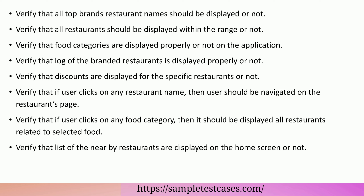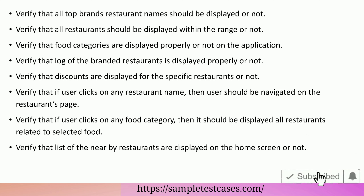Verify that all images should be displayed as per specification in the sliding bar. Verify that all top brands and restaurant names should be displayed. Verify that all restaurants should be displayed within the range. Verify that food categories are displayed properly. Verify that the logo of the branded restaurants is displayed properly. Verify that discounts are displayed for specific restaurants. Verify that if a user clicks on any restaurant name, they should be navigated to the restaurant's page.